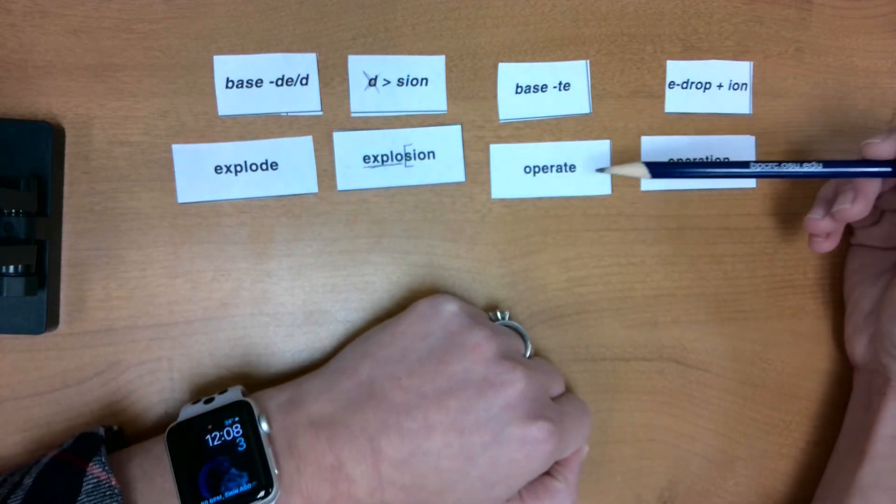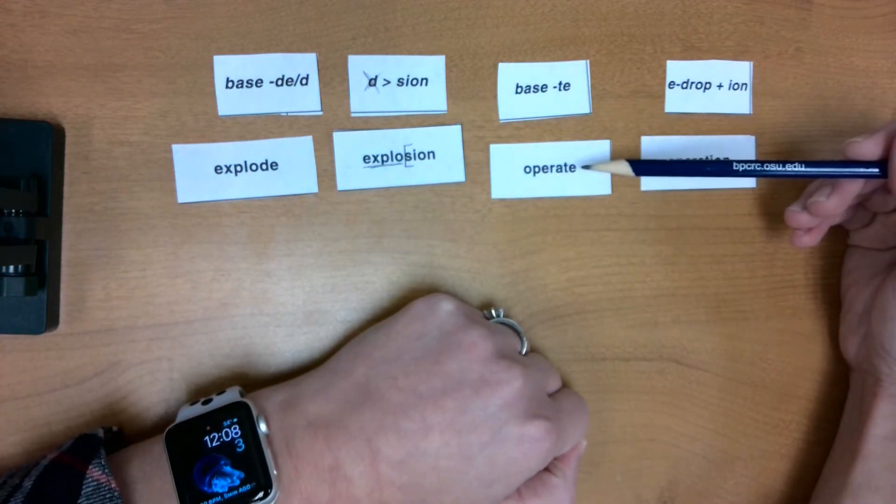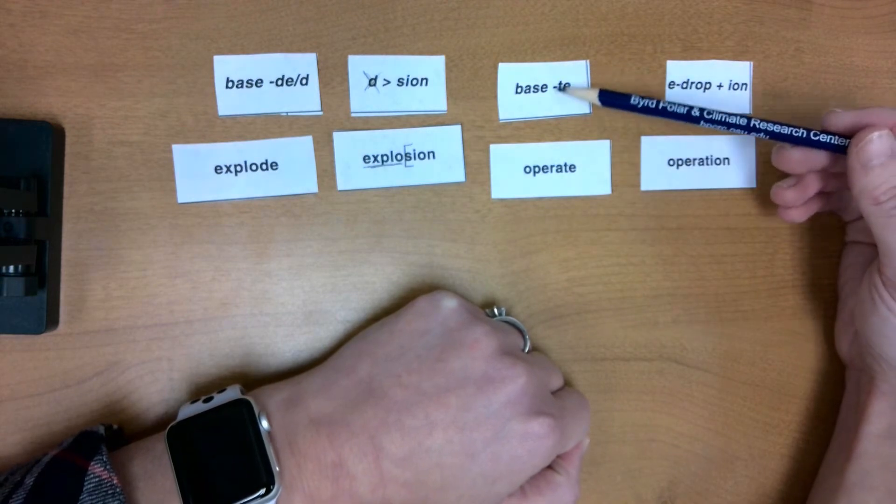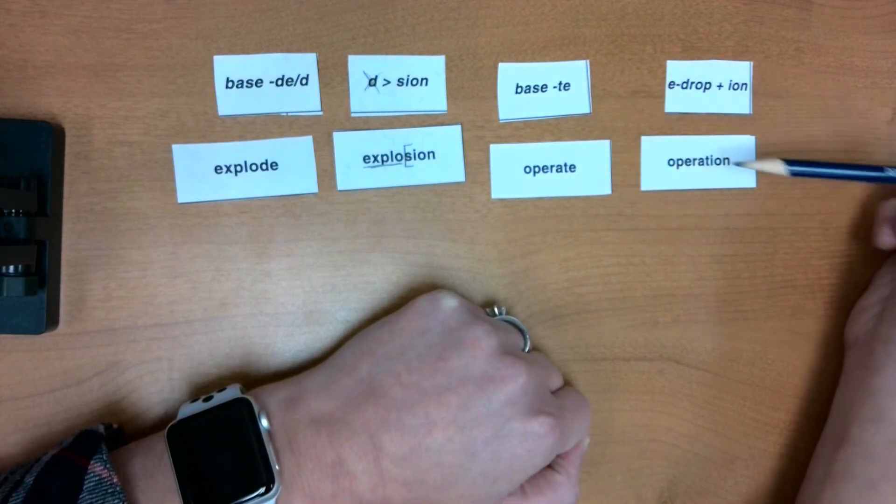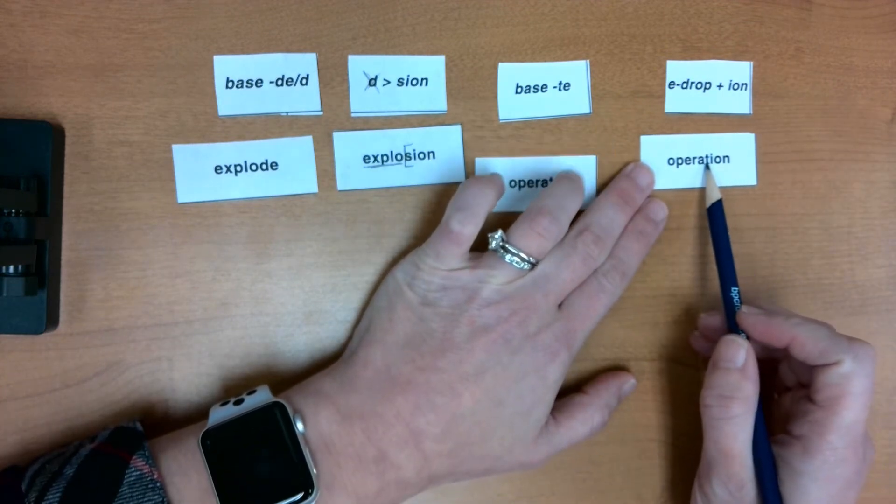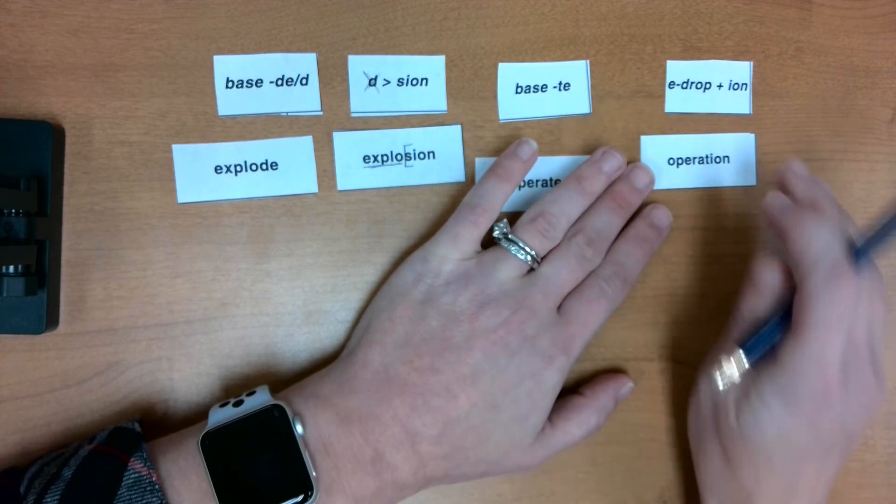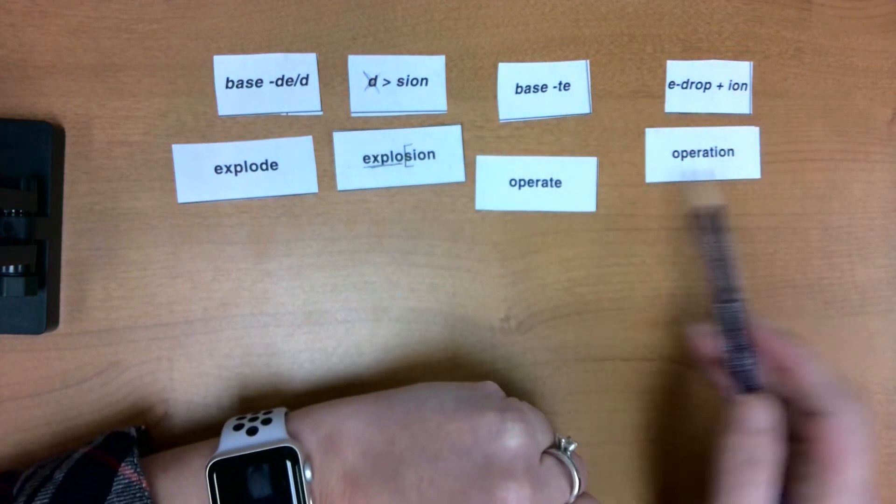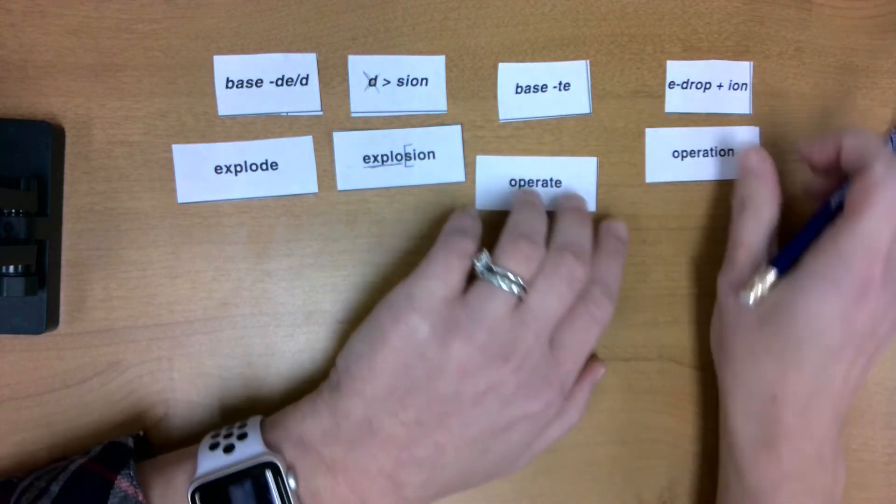Similarly to base words that end with an E. When we have a base word that ends with a T-E, we're going to drop that E before adding I-O-N. So we've got that word part shun, right? And that T changes from that sound, like an operate to operation.